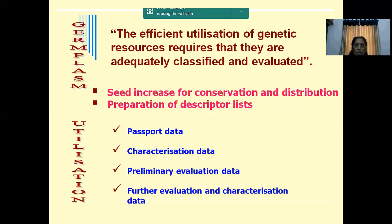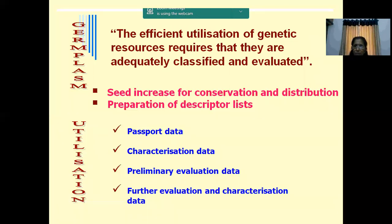Utilization will be fruitful only if we do systematic evaluation for different characters and document the results - this accession is good for yield, this accession is good for superior quality, this accession is good for disease resistance for a specific biotic stress. We have to classify germplasm into different groups for specific use. Initially we have passport data collected during exploration, then characterization data, field evaluation data, preliminary evaluation data, and further evaluation and characterization data.